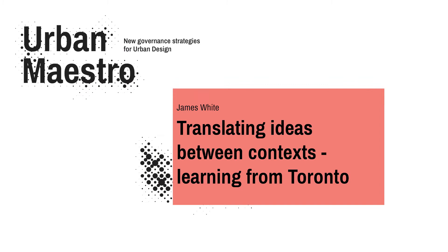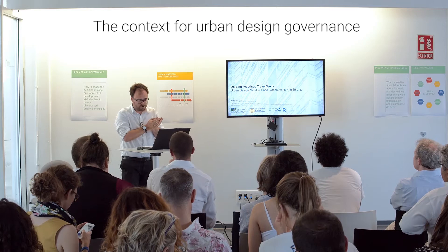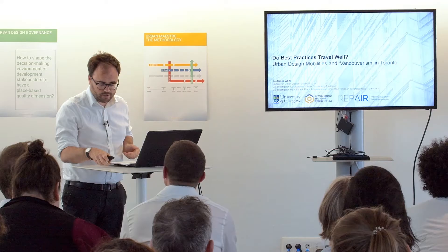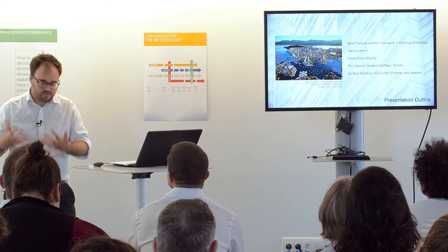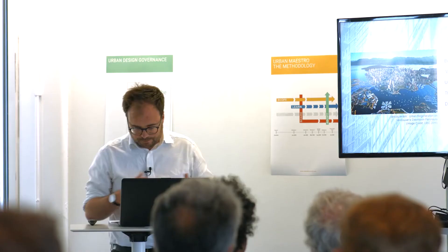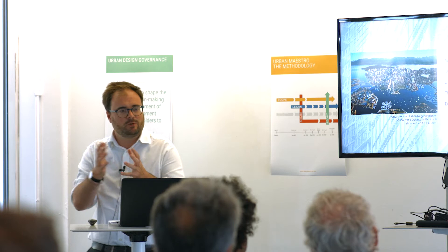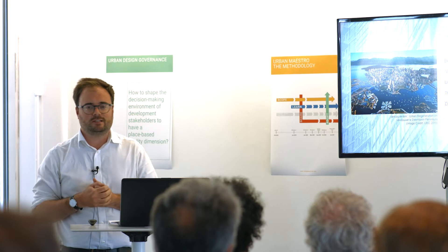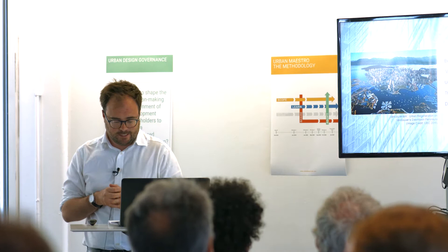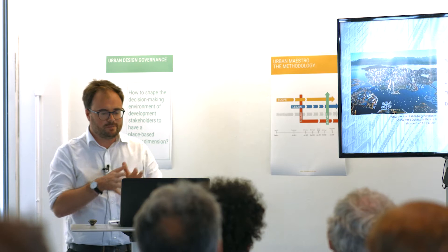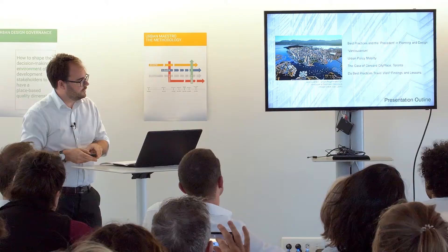I thought I'd take us on a journey across the Atlantic Ocean to Canada to finish off and focus on how we translate ideas of design governance and best practice. I'll begin by talking about best practice and precedence in planning and urban design, then introduce Vancouverism, a widely cited example of a best practice urban design formula. I'll briefly explore a theoretical idea of policy mobility, and then turn to the case study I've been looking at for about 10 years, located in Toronto in Canada, and explain how Vancouverism was mobilized by a Vancouver developer to that city. I'll then reflect on whether best practices actually travel very well and what we might learn from this particular example.